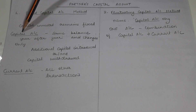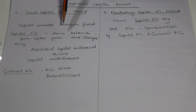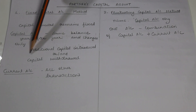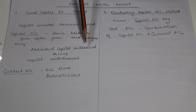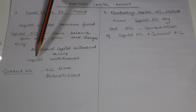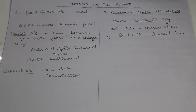The balance in the Capital Account will remain the same year after year without changing. It changes in only two conditions: first, when additional capital is introduced; second, when capital is withdrawn from the business. Otherwise, it is going to remain fixed.